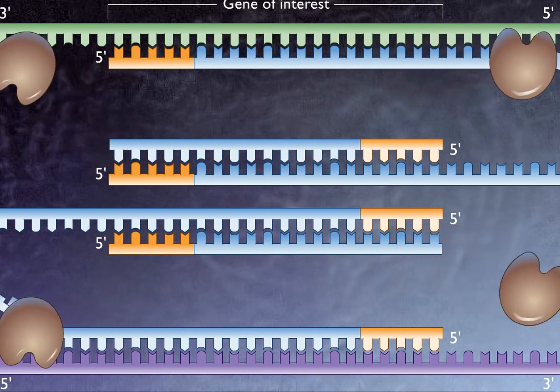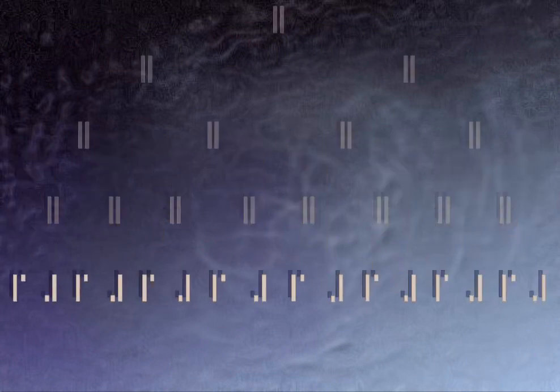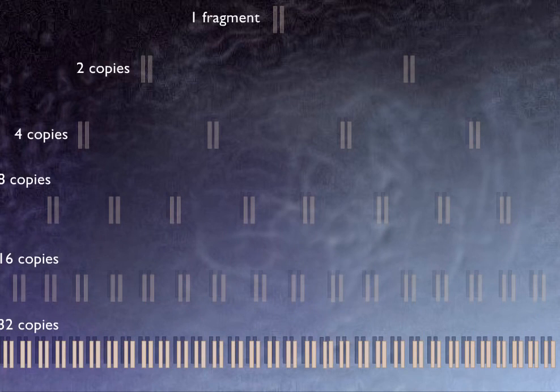This process is repeated until enough DNA has been produced to be identified or used for further research. After 21 cycles, one molecule of DNA can be amplified to over a million copies.